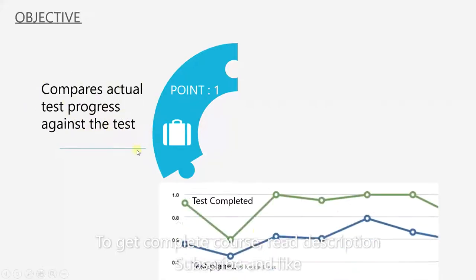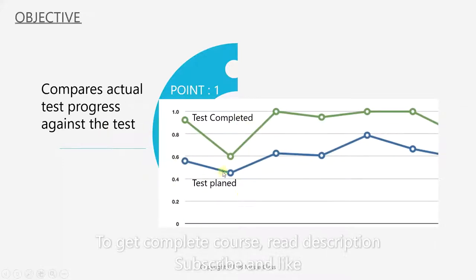We can see this in the form of a graph. Here are the tests we had planned and here are the ones we completed. In this case, we have completed more than we had planned.